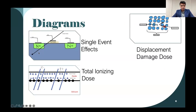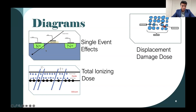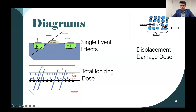Here are a few diagrams that I drew. On the top left, we can see single event effects — this straight line is a single radiation particle passing through the gate and the oxide, depositing positive and negative charges into the silicon, which is shown in blue. On the bottom left, we can see total ionizing dose, where many particles pass through, each depositing positive and negative charges into the oxide. And for displacement damage dose, we can see a radiation particle coming from the left — when it hits an atom, it displaces it and turns it into a radiation particle. This entire region shown is silicon.